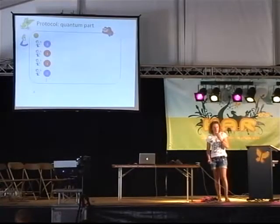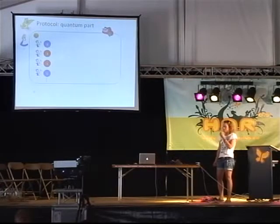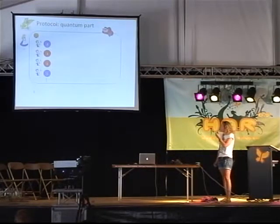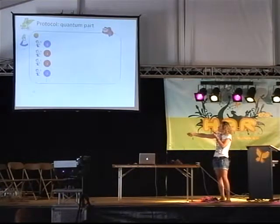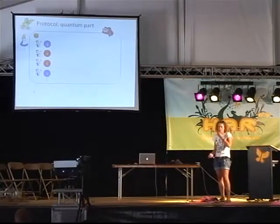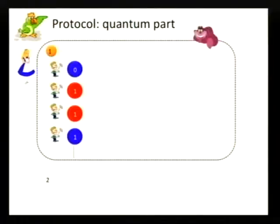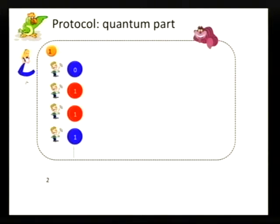We're going to use the encodings that we just talked about, and in fact the quantum part of the protocol will be exactly that. We do this n times and in each round I flip a coin, choose a bit at random, and also choose an encoding, either red or blue. This is exactly what happens in the first step of quantum key distribution, only we'll do some different classical post-processing.